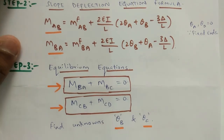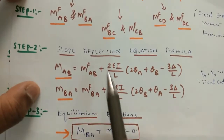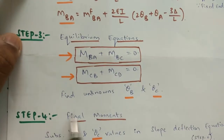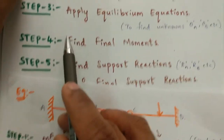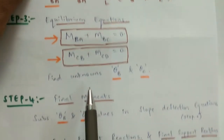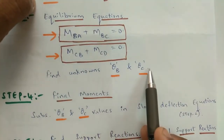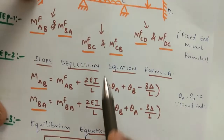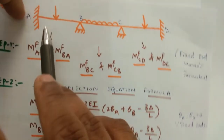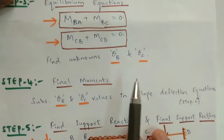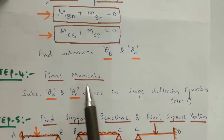This theta_B and theta_C you substitute again into the six equations from step number 2. That is step number 4 — to find the final moments. How do you find the final moments? Substitute the theta_B and theta_C values in the slope deflection equations from step number 2. There are six equations — two for each span. Substitute the values of theta_B and theta_C wherever they appear, and you will get the final moments.